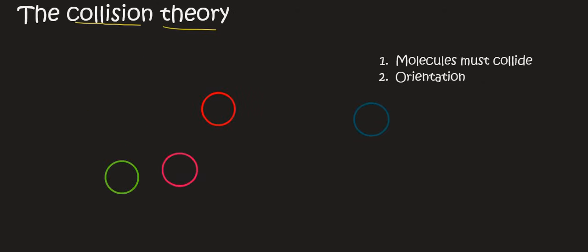For example, the green might go and attach itself to the red, and then the pink might go attach itself to the blue. But the point is, in order to initially have broken those bonds, we needed energy. So we need to have enough energy, and that energy that we need is called activation energy.